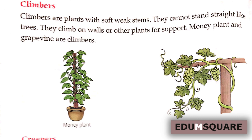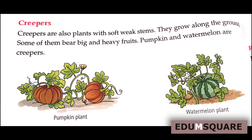Some plants have soft weak stems and grow along the ground. Some of them bear big and heavy fruits. Such plants are called creepers. Creepers also have soft weak stems and grow along the ground. Pumpkin and watermelon are creepers.